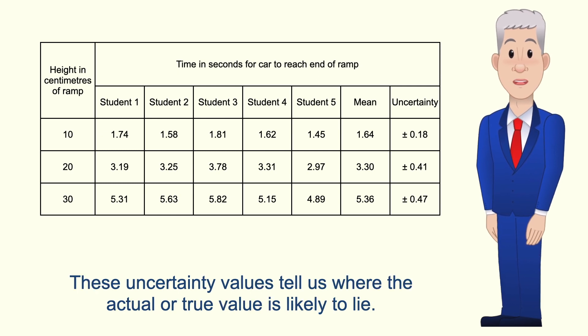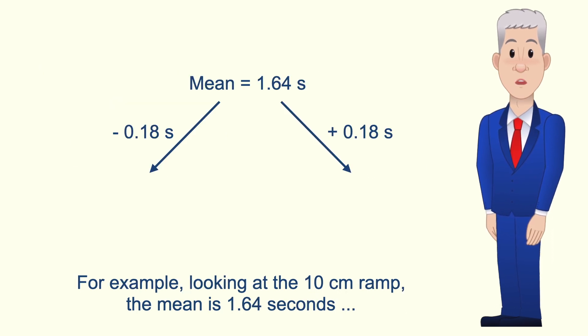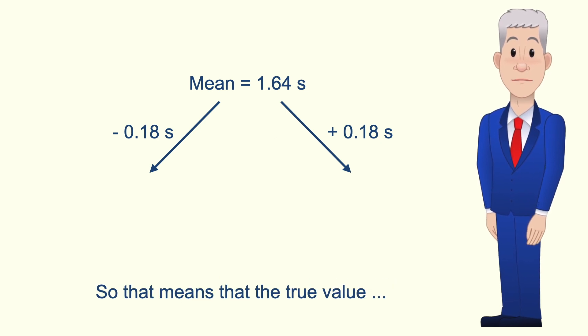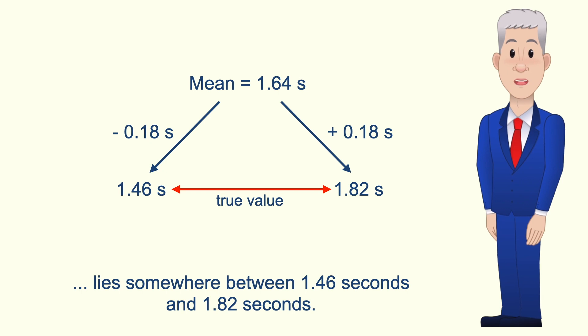Okay now these uncertainty values tell us where the actual or true value is likely to lie. So for example looking at the 10 centimeter ramp the mean is 1.64 seconds and the uncertainty is plus or minus 0.18 seconds. So that means that the true value lies somewhere between 1.46 seconds and 1.82 seconds.